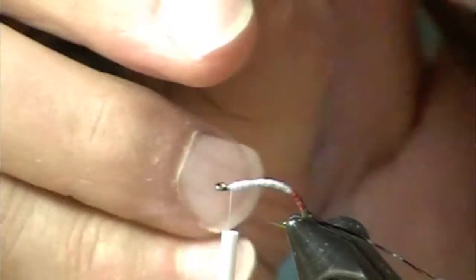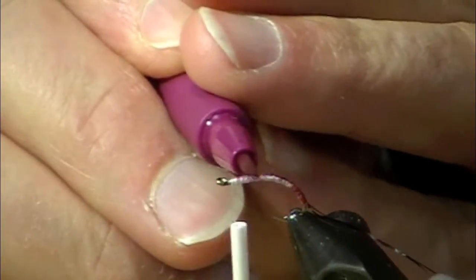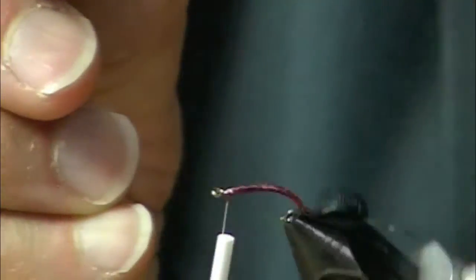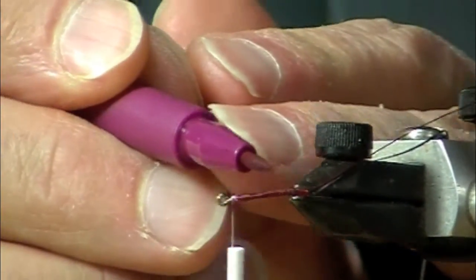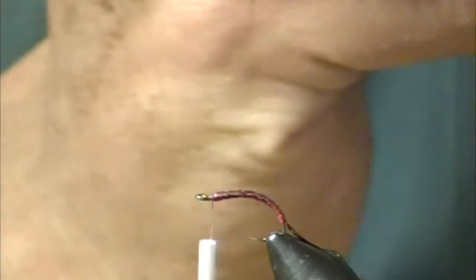And now I've got burgundy, and it's not that much different, but burgundy maroon is a great color for chironomids, and there are some people that that's pretty much all they fish. So now we've got the colors in there.